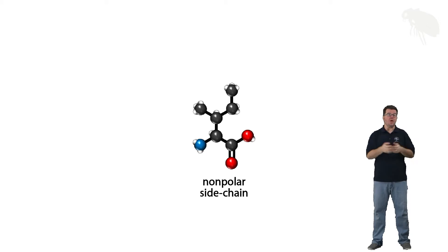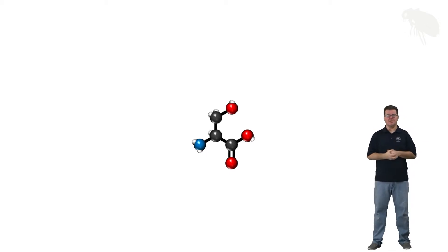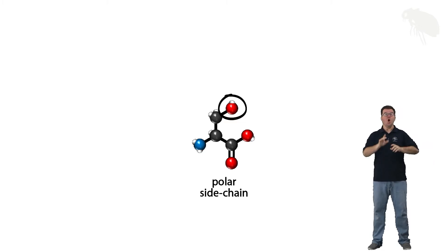If there's non-polar, there must be polar, right? Here's serine. Serine with its hydroxyl group in the side chain—hydroxyls are hydrophilic—it's a polar side chain. Although this group would be better called polar neutral because it's a polar side chain, but it's not acidic and it's not alkaline.